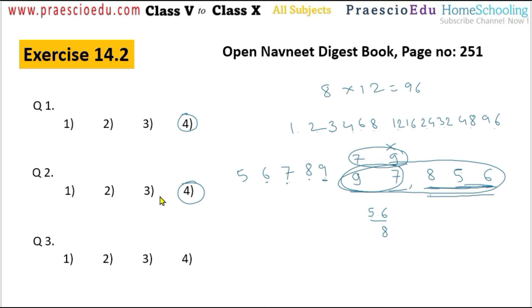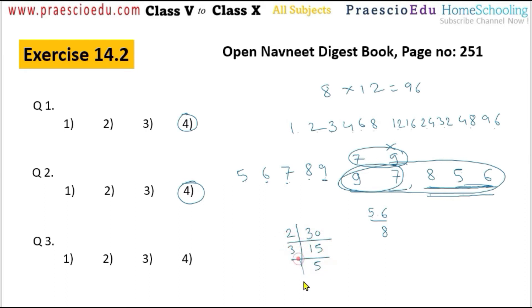Question number 3: what is the difference between the number of prime factors and all the factors of 130? The prime factorization of 130 gives 2, then 15... then 3, 5, and 5, 1. So the prime factors are 2, 3, and 5 — total count is 3.